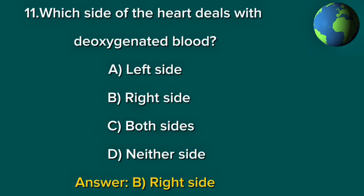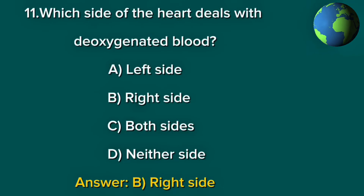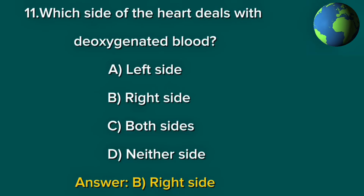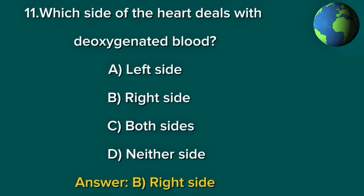Question 11. Which side of the heart deals with deoxygenated blood? A. Left side. B. Right side. C. Both sides. D. Neither side. Answer: B. Right side.